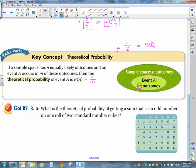Here is another example. What's the theoretical probability of getting a sum that is an odd number on one roll of standard 2 standard number cubes? Now, here's a chart that makes it easy to find, but in case you don't have a chart, if you start listing them in order...